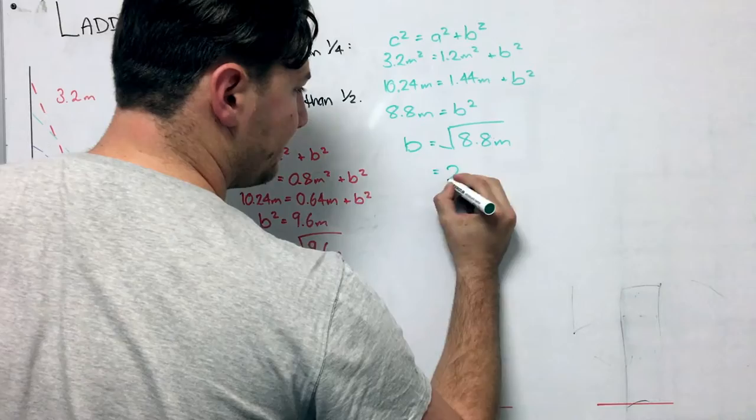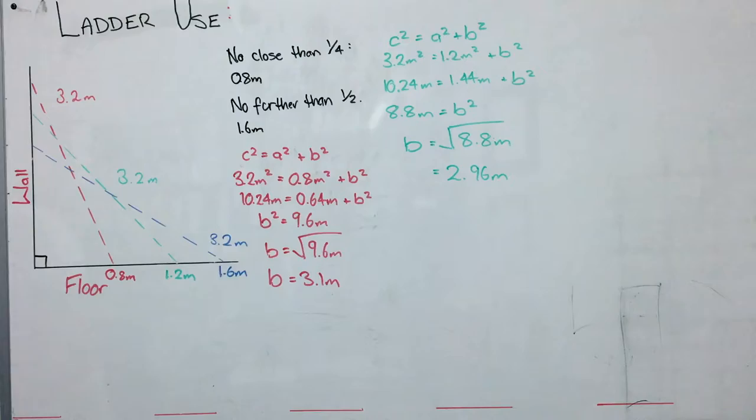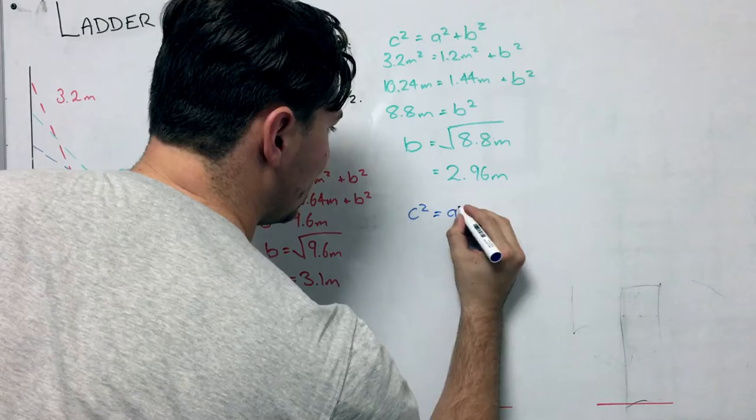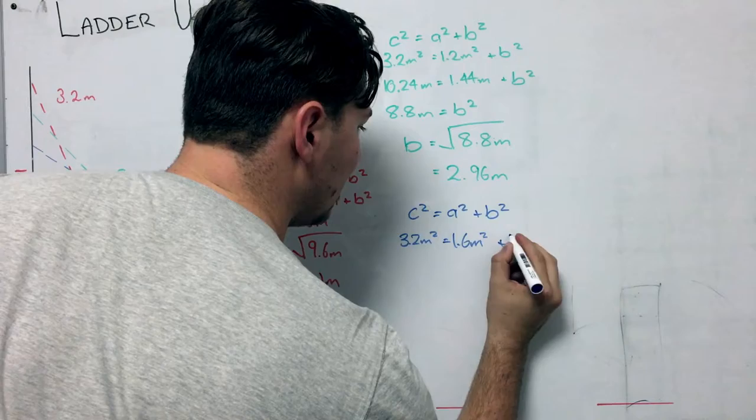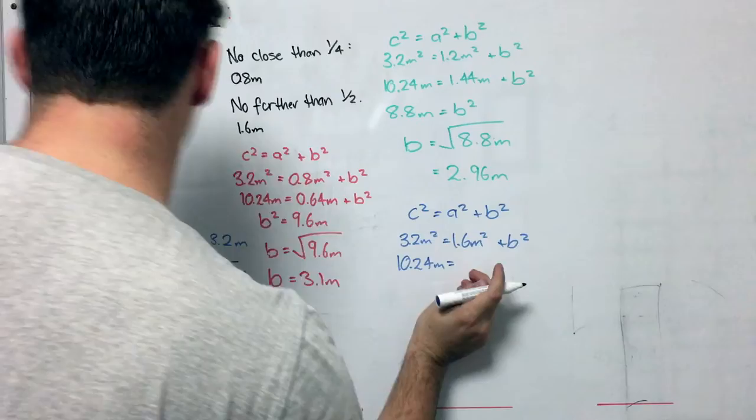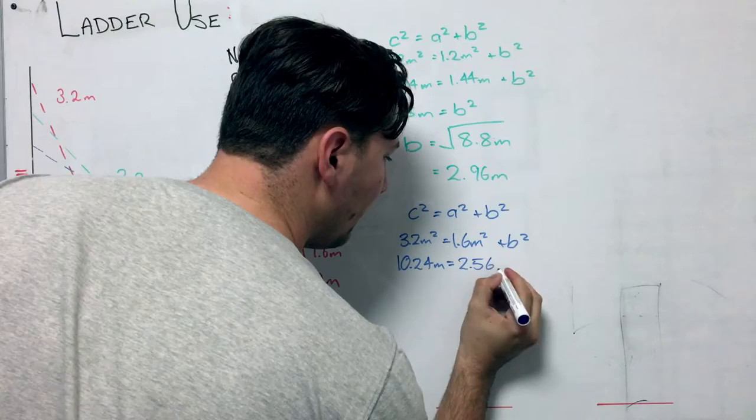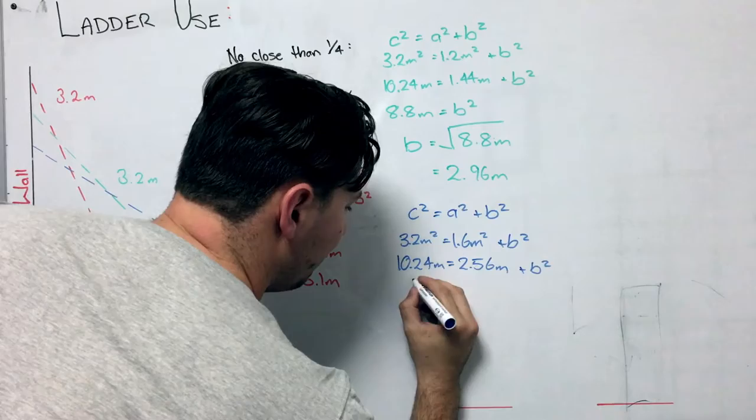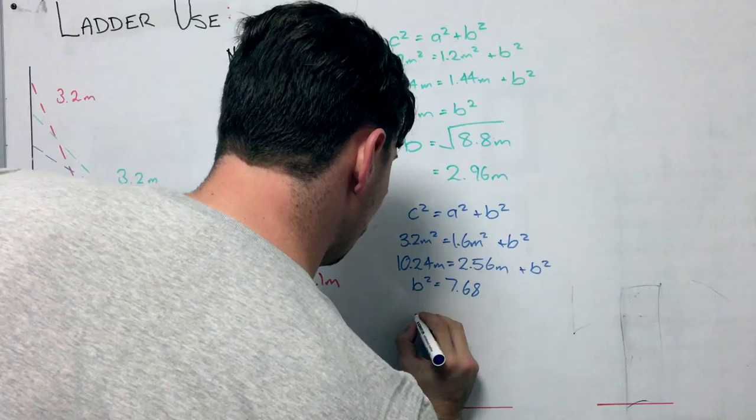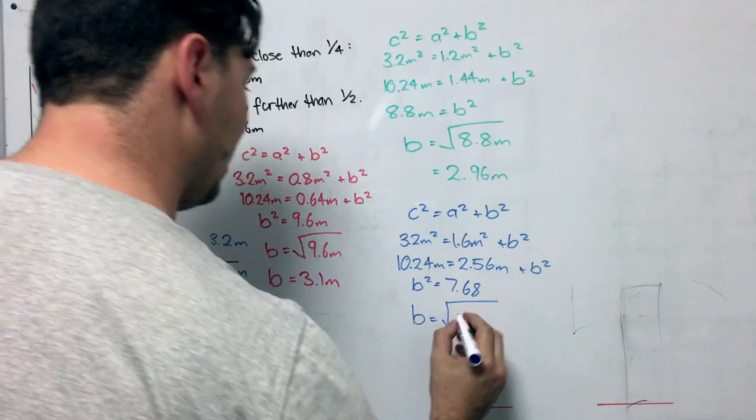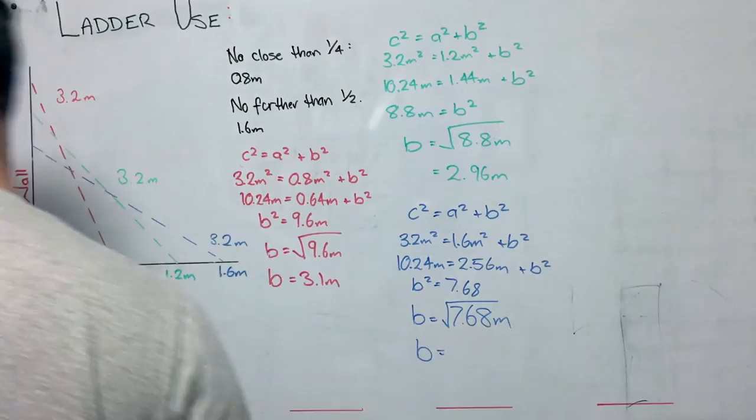Good. And now we can do the same with our final one, which will be at 1.6 metres. So again, C² = A² + B². Going through it a bit quicker now, we'll have 3.2 metres squared, which will equal 1.6 metres plus our B² value. 10.24 as it has been the entire time. 1.6 squared, that will become 2.56 metres plus B². And solving for that, we will get our B² value, which will be equal to 7.68. And then we continue on to B, which will equal the square root of that. And B will be equal to 2.7 metres.